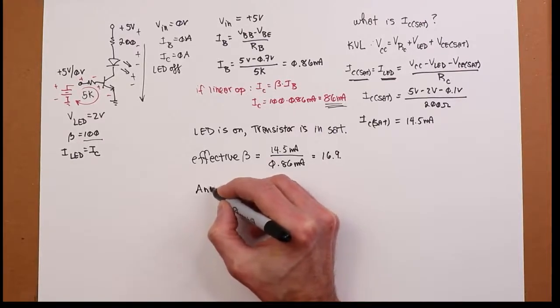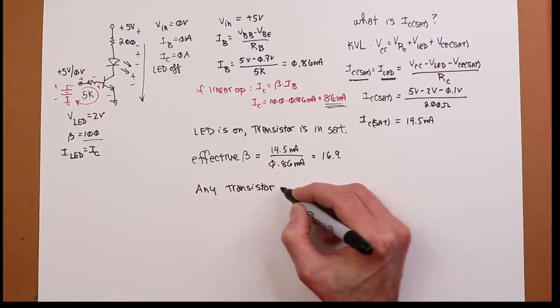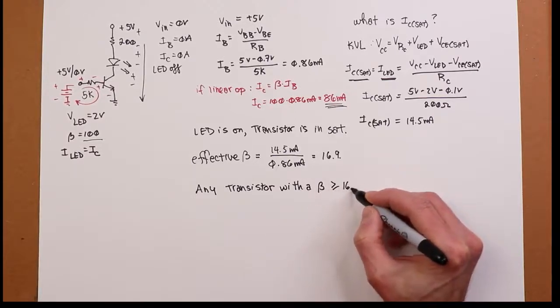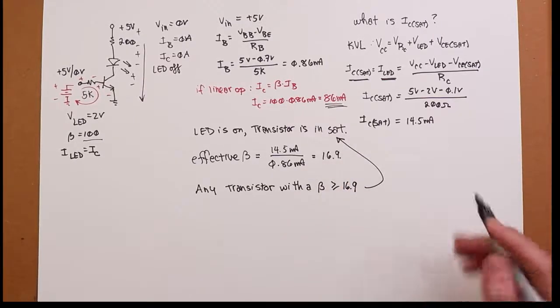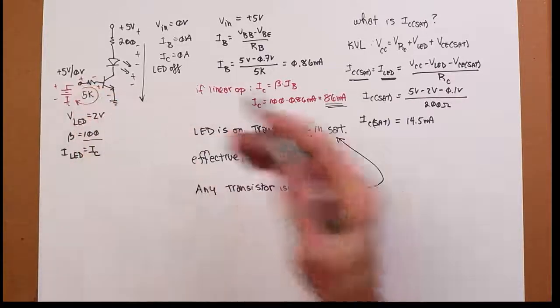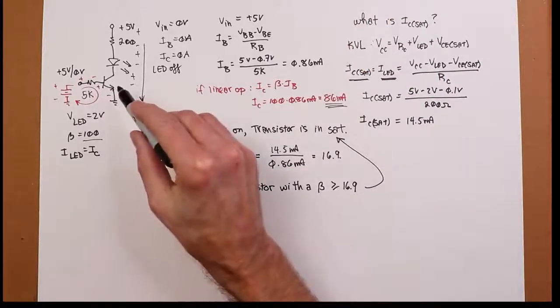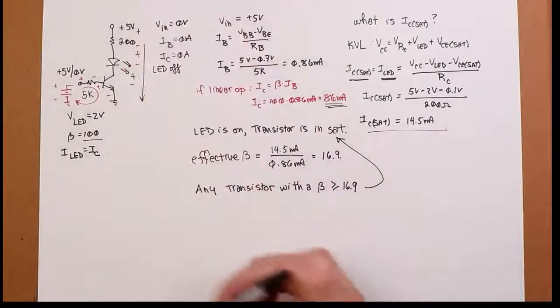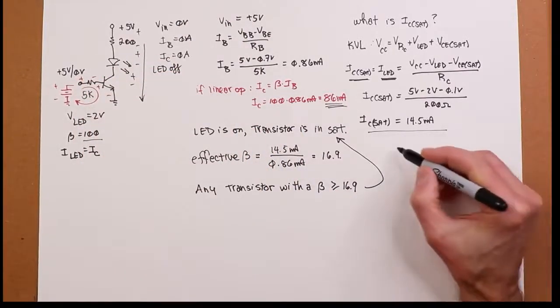Any transistor with a beta that's at least 16.9 puts the transistor in saturation. So I could have a big variation, and I could have a transistor with beta of 100, beta of 50, beta of 200, doesn't matter. All those transistors are going to go into saturation. Therefore, the current will always equal the saturation current. Every single circuit that we make will produce 14.5 mils, and therefore the same exact brightness on the LED.